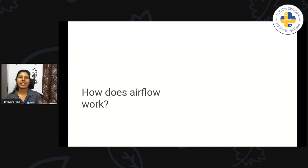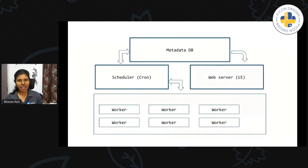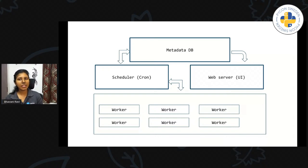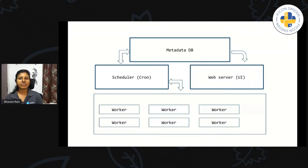How does Airflow work architecturally? It's a glorified cron job in one sentence, but it provides all these additional features which make it very easy for us. It starts with a metadata DB — all the DAGs and tasks are stored in a Postgres or MySQL DB, and it's customizable. The scheduler, which runs along with Airflow, goes through the metadata DB, looks for the scheduled task, creates a task instance, and hands it over to the worker. All of these are tracked in a metadata DB for the web server component to display in the UI. We'll see more of how the UI looks and how the DAG is designed in the next slides.